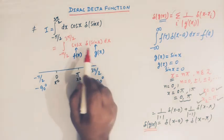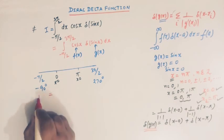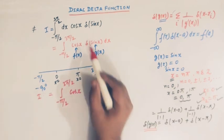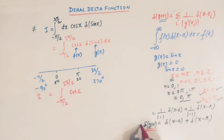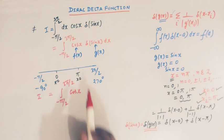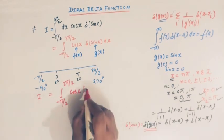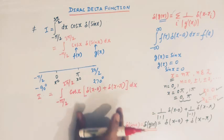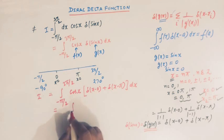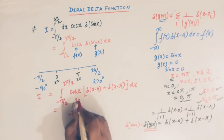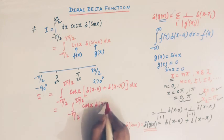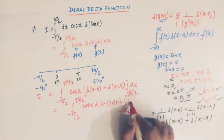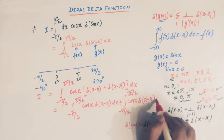Substituting this into the integral I, we get ∫₋π/₂^{3π/2} cos(x)·[δ(x) + δ(x − π)] dx. Writing this as a sum of two integrals: ∫₋π/₂^{3π/2} cos(x)·δ(x) dx + ∫₋π/₂^{3π/2} cos(x)·δ(x − π) dx.